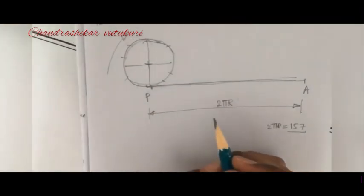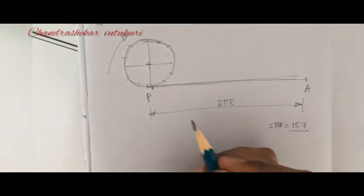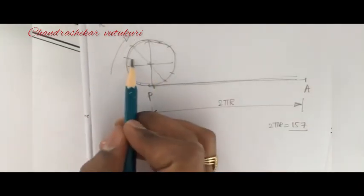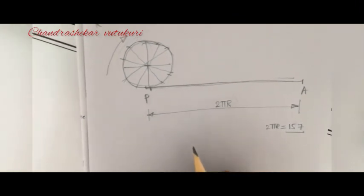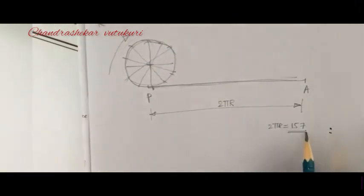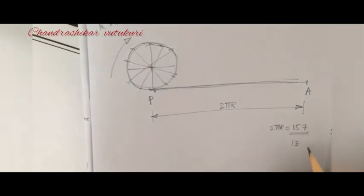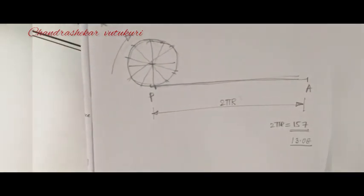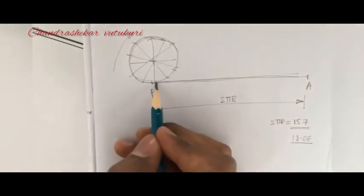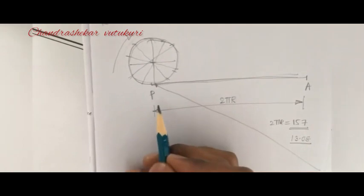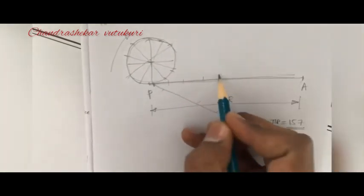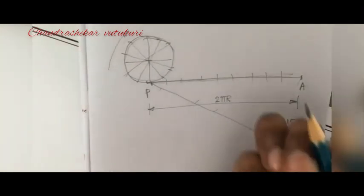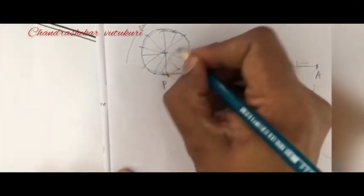We use 12 divisions because finally we are going to get a smooth curve. I hope you know how to divide the circle into 12 equal divisions. If not, please go through this channel for the division of a line concept. Since the length is 157, when you divide 157 into 12 equal divisions that is around 13.08, which is neither 13 nor 14, so you are supposed to divide the PA line into 12 equal divisions using the geometric method.